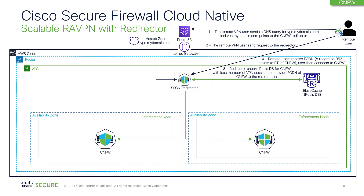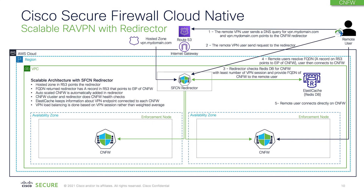The user will then resolve that FQDN using Route 53, and that is the phase where we provide the IP address of the CNFW, and the user makes a connection back to the CNFW. The automation part is handled automatically by the CNFW architecture. The moment we add a new CNFW, that information is added in the redirector, and the Redis database is added in the architecture automatically. Redis database keeps information about VPN sessions, and load balancing in this architecture is done based on VPN sessions rather than weighted average.